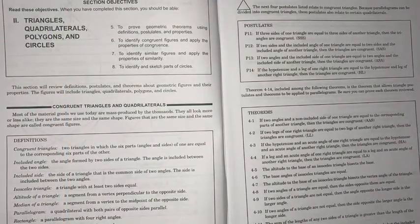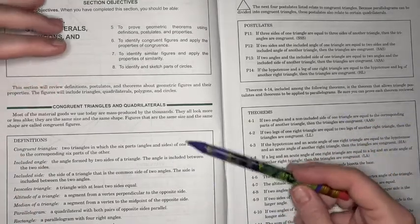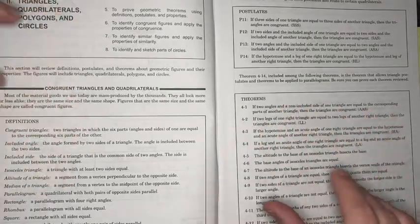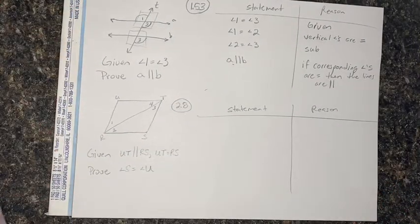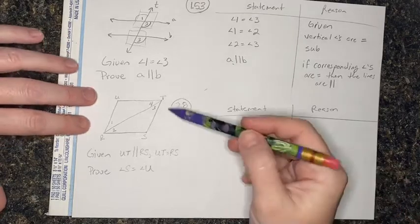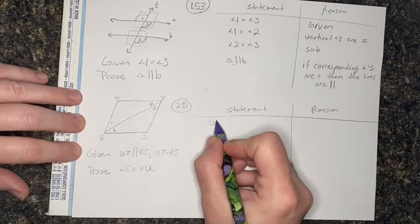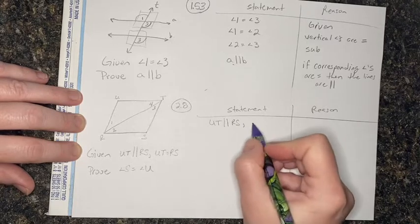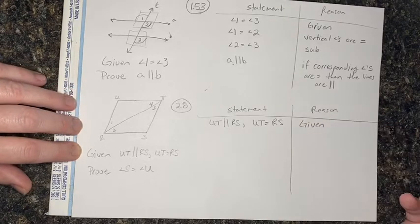Starting section 2, we're going to be reviewing triangles, quadrilaterals, polygons, and circles. The first section is congruent triangles and quadrilaterals. Again, our definitions, postulates, and theorems that we've studied all year long are condensed and reviewed in this section — please read it thoroughly. Let's take a look at problem 2.8. It's another proof, so let's work through it together. We have this shape labeled as such, and the information we're given is that UT is parallel to RS and that UT is equal to RS.